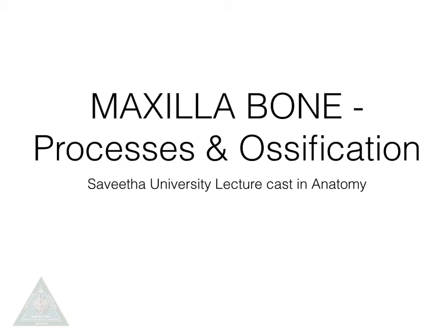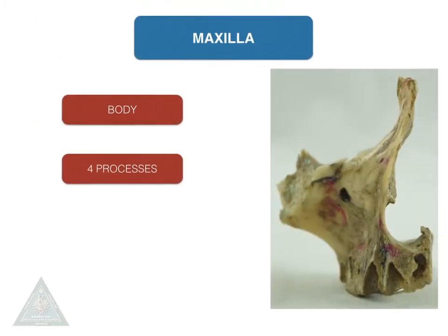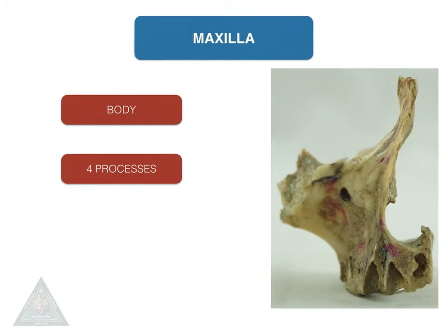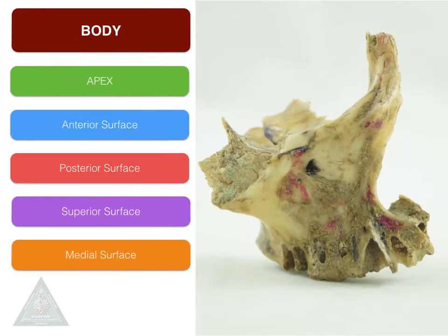Welcome to Savitavani's lecture cast in Anatomy. We are going to learn about the processes and ossification of maxilla. Maxilla has got a body and four processes. The features in the body: it has got an apex, a medial surface of the base, and three surfaces — anterior, posterior, and superior surface.